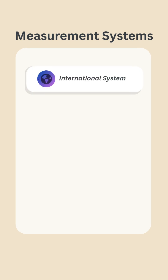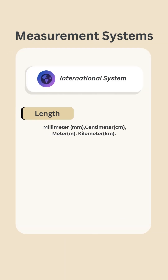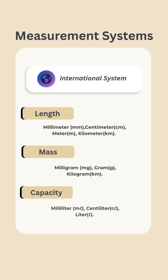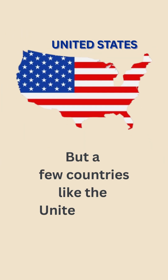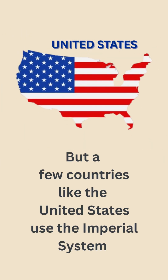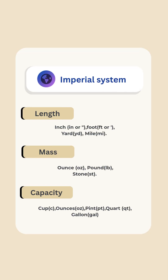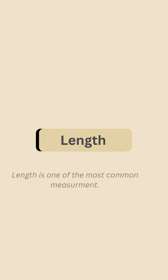In measurement systems, most countries use the international system, or metric system. We measure length in meters and kilometers, mass in grams and kilograms, and capacity in liters. But a few countries like the United States use the imperial system, with units like inches, feet, pounds, and gallons.